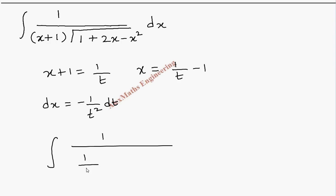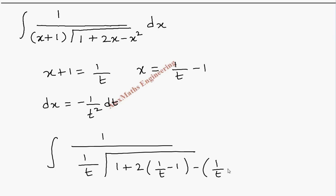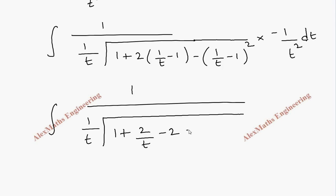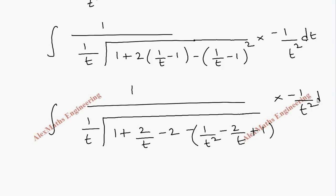Substituting: 1/(x+1) becomes 1/t, and inside the square root we have 1 + 2x = 1 + 2(1/t − 1) = 2/t − 1, and −x² becomes −(1/t − 1)². Expanding (1/t − 1)² using the (a−b)² formula gives 1/t² − 2/t + 1, and we also have −(1/t²)dt outside.